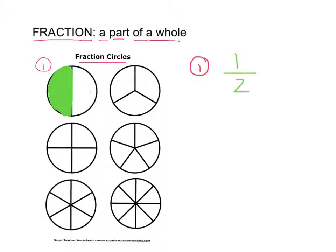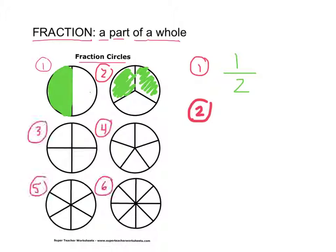Okay, we're going to do another one. Number two is this circle. How many sections were colored or shaded in? Two. Two out of how many sections are there altogether in the circle? So I would write this as two out of three — that's the part that's shaded.